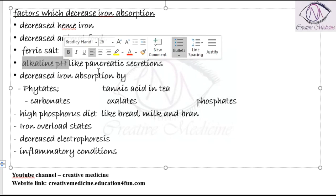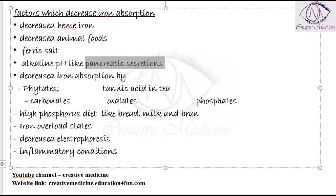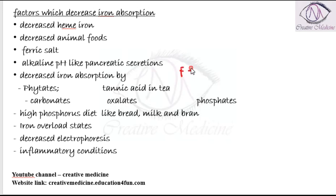Alkaline pH like pancreatic secretions will decrease iron absorption. Iron absorption can also be decreased by phytates, carbonates, tannic acid, oxalates, or phosphates because iron will form complexes with all these substances. As a result, iron absorption is decreased.